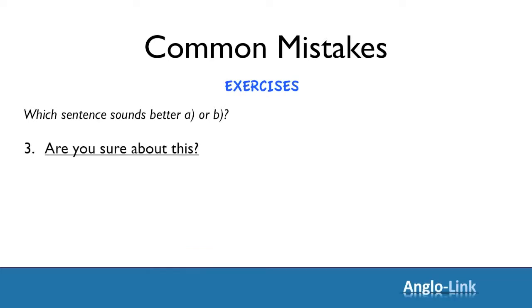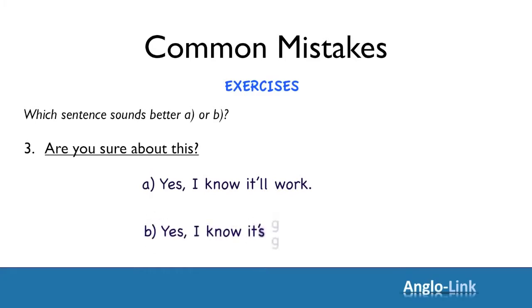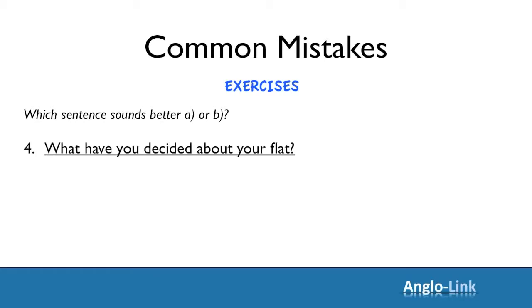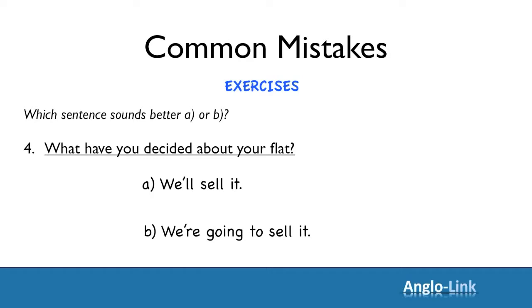Third example: someone asks are you sure about this? Would you say yes I know it will work, or yes I know it's going to work? The correct answer is B — yes I know it's going to work — because you are sure about it. Final example: someone asks what have you decided about your flat, and you have a decision. Would you say we'll sell it, or we're going to sell it? Correct — we're going to sell it, because you've already decided before you were asked.